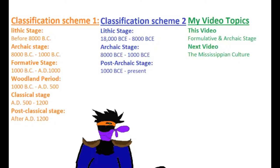The formulative stage in a classification of North American chronology is often called the Neo-Indian Period, or the Woodland Period, after one of its more famous cultures. Regardless of its name, the formulative stage, classical stage, and post-classical stage are in North America sometimes incorporated into the post-archaic period. I will not be doing that here, however. The topic of this video will be the stages of woodland and formulative, and next time we'll discuss the Mississippian culture, which pretty much represents the classical and post-classical stages in the southeast.